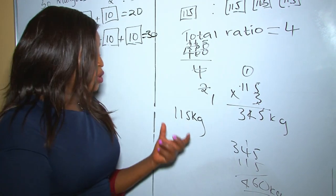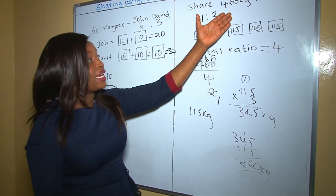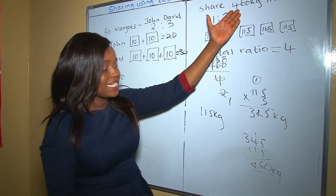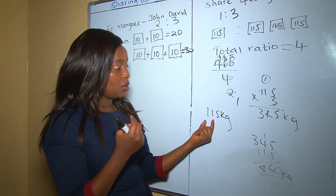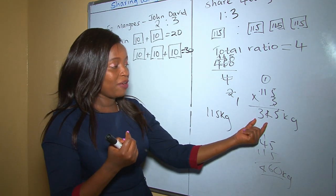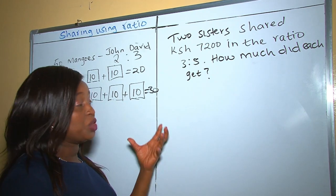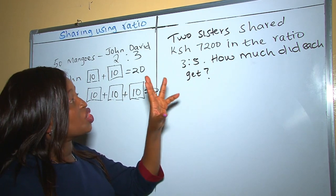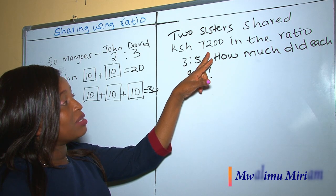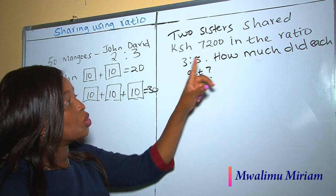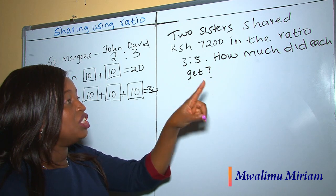So when we put them together we go back to 460 kilograms — the first part got 115 kg and the other got 345 kg. In the next question, two sisters shared Kenya Shillings 7200 in the ratio 3 is to 5. How much did each get?